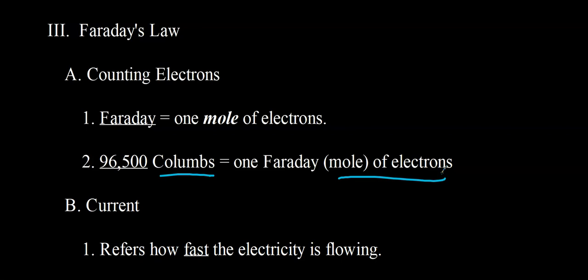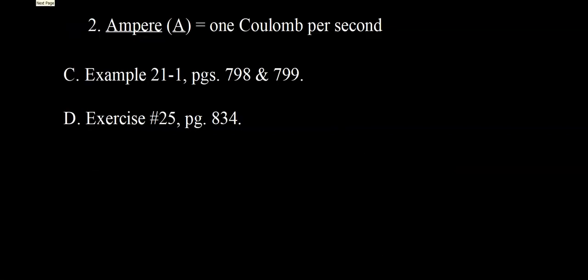Current is a property of electricity. It refers to how fast the electricity is flowing. And the unit for charge is called an ampere or an amp. So an amp is one coulomb per second. So again, we have a relationship here that we can use as a conversion factor between charge and time, say that an electrolytic cell has been operated.